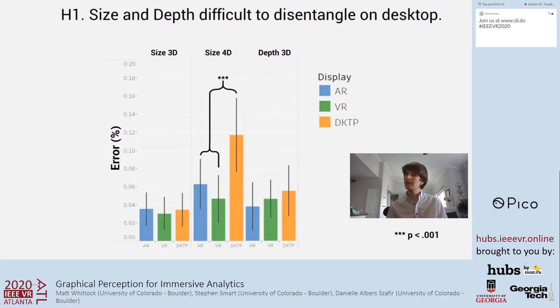Subjective feedback pointed to the fact that participants on the desktop were able to navigate to a perspective on the side of a visualization to identify differences in depth. However, participants clearly had difficulty when asked to disentangle size from depth in 4D size visualizations on the desktop. Stereo viewing in AR and VR resolves this issue, allowing participants to infer depth without necessarily rotating the viewpoint.